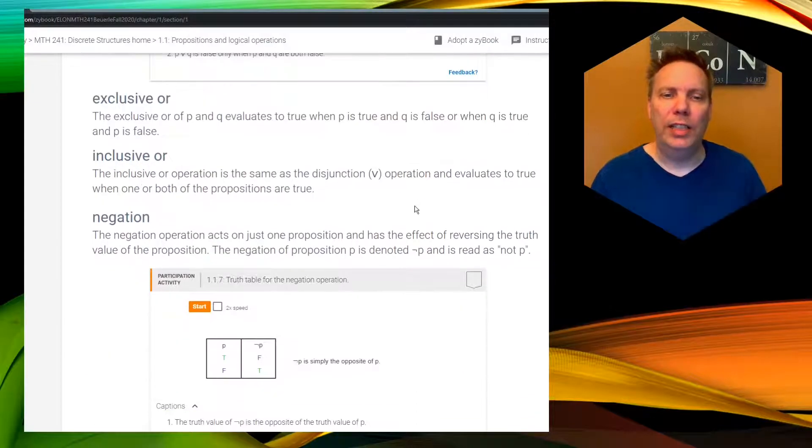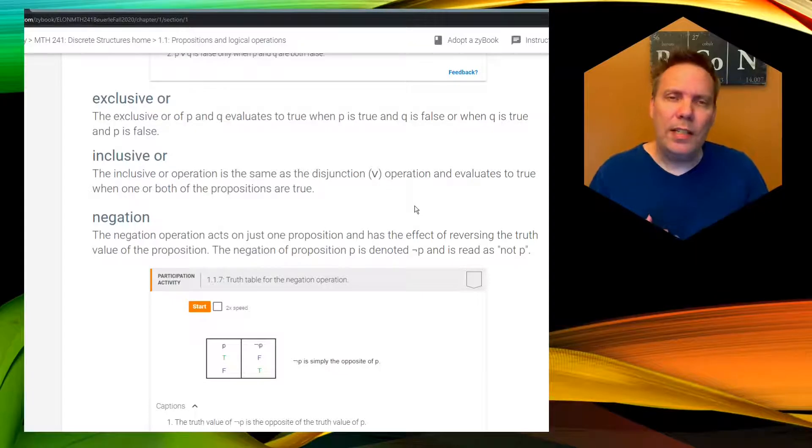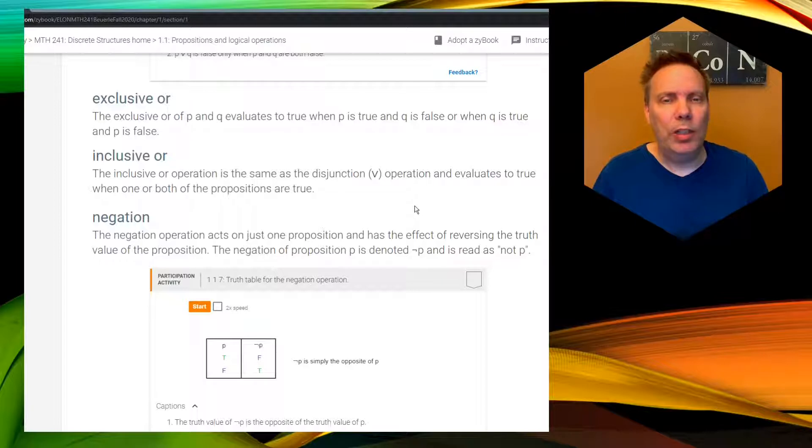Another operation is called a negation. And it's exactly what it says it does. It negates a proposition. You can negate a compound proposition as well. What is the negation of an and? Well, I want to talk about that with my handwritten work and see if we can come up with that. So let me move over to some handwritten work.